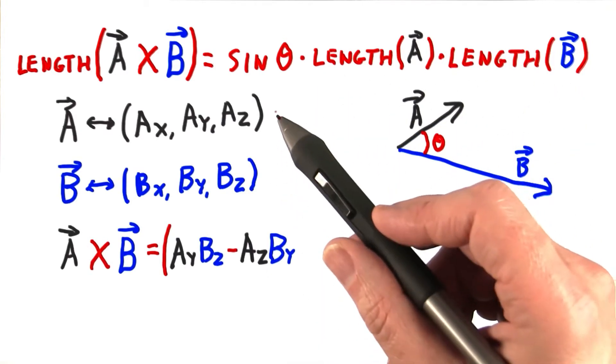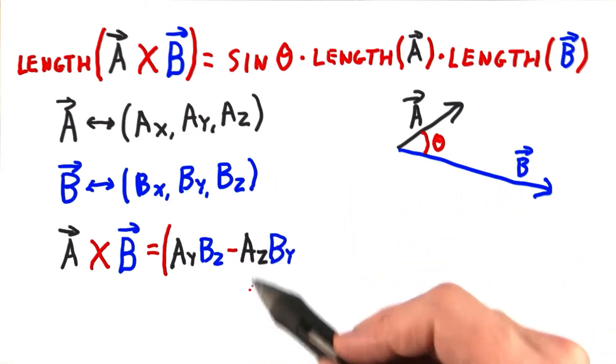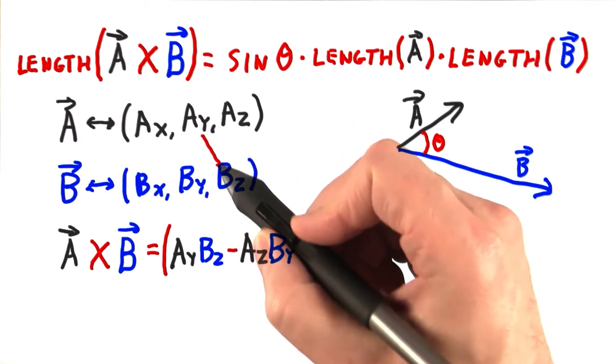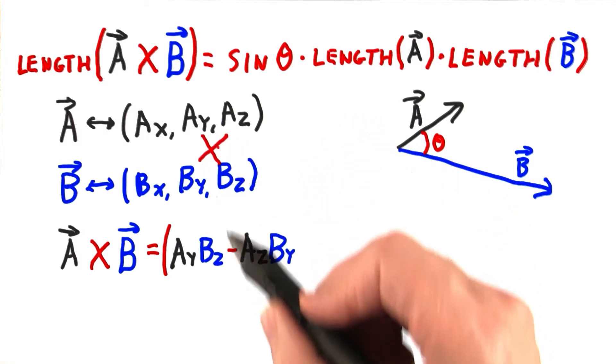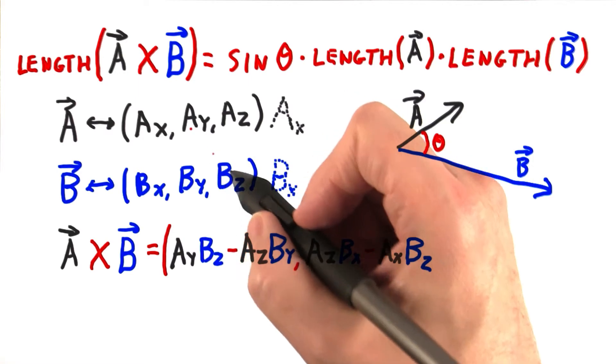The cross product itself is computed by multiplying neighboring elements of the two vectors coordinates. For the x coordinate, we multiply ay times bz, and then subtract az times by. For the y coordinate, we multiply az times bx minus ax times bz. I like to do this kind of x cross thing here, as we did before.